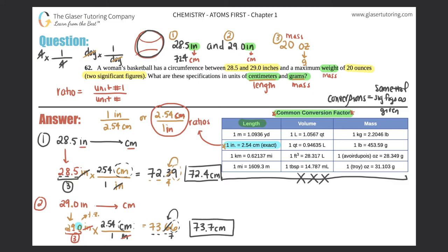So 29.0 inches equals 73.7 centimeters. Now we know the specifications in centimeters: the circumference is between 72.4 centimeters and 73.7 centimeters. Box that off — that's the answer for the centimeters part. Now we just need to convert 20 ounces into grams.